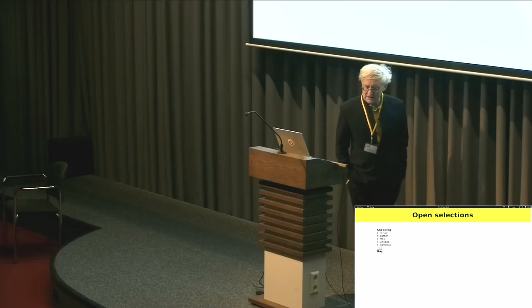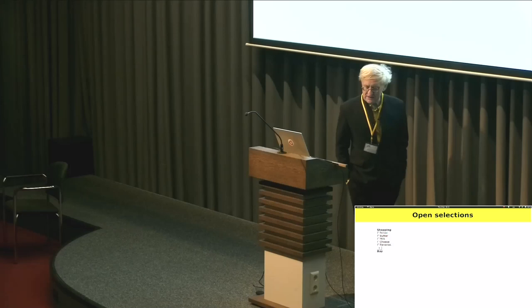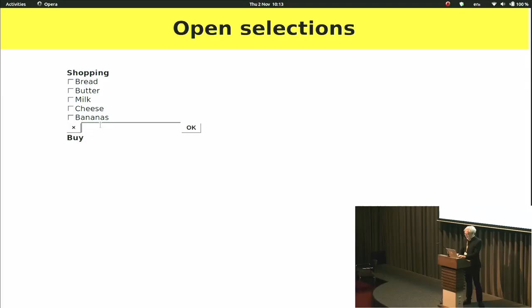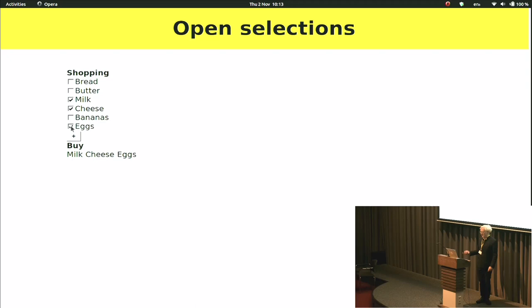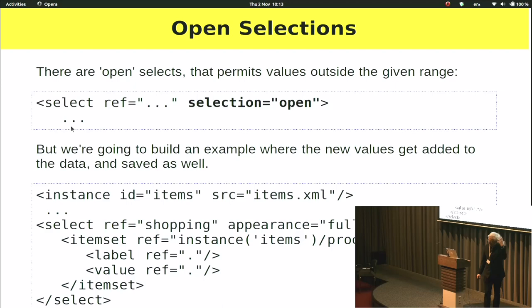The next technique is open selections. You've got a list but now you want to add an item to it — for instance, I might want to add 'eggs' to the list, and then it appears. So it's an open selection. XForms does actually have something called an open selection, which means you've got your values supplied but it doesn't restrict you just to those ones — you can type something in as well. But what we want to do now is add the item to the data itself.